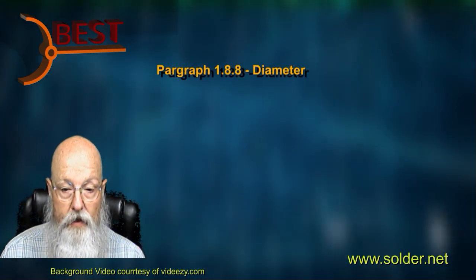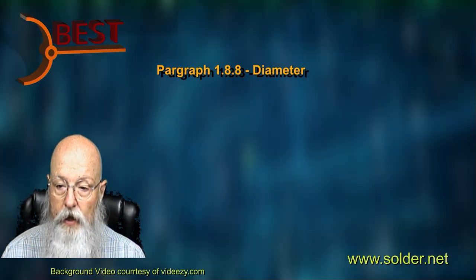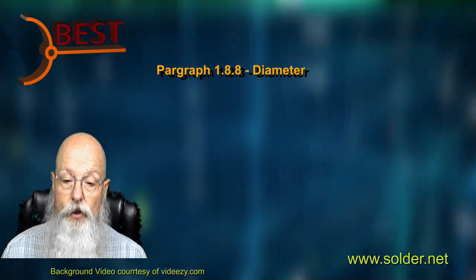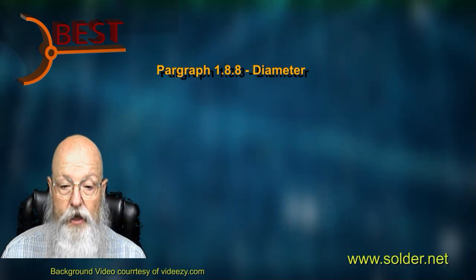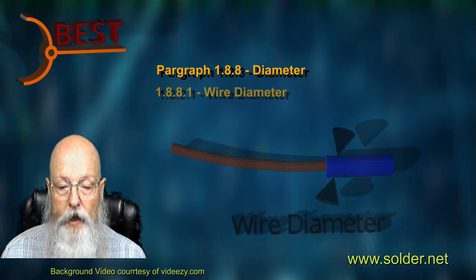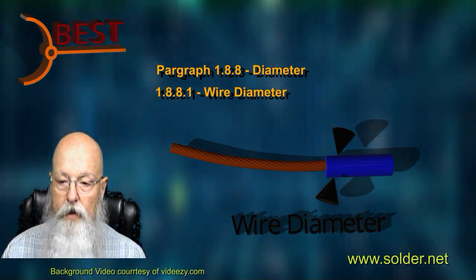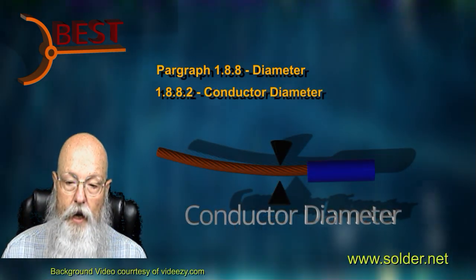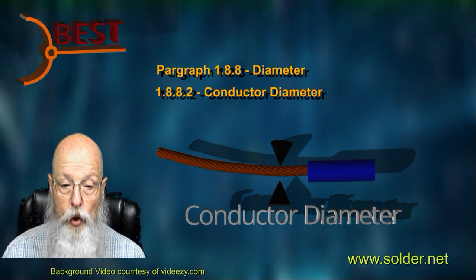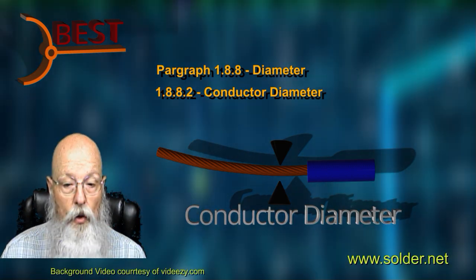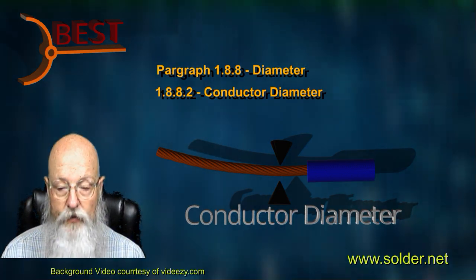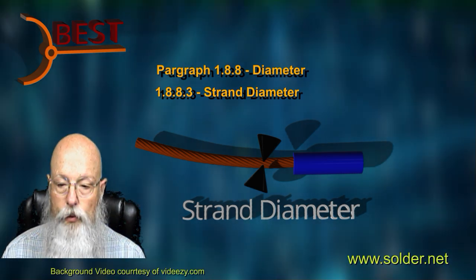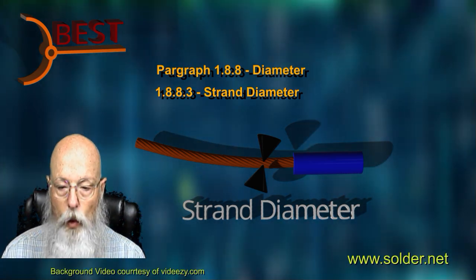In paragraph 1.8, there has been the addition of wire diameter statements. These are not new dimensions used in the document, but it's the first time all three have been included in the definitions section. The definition of wire diameter remains the same — the diameter of the wire including the insulation. Conductor diameter is defined as the diameter of the conductive portion of the wire or lead, whether solid or stranded filament. Strand diameter is the diameter of an individual filament used in a twisted wire conductor.